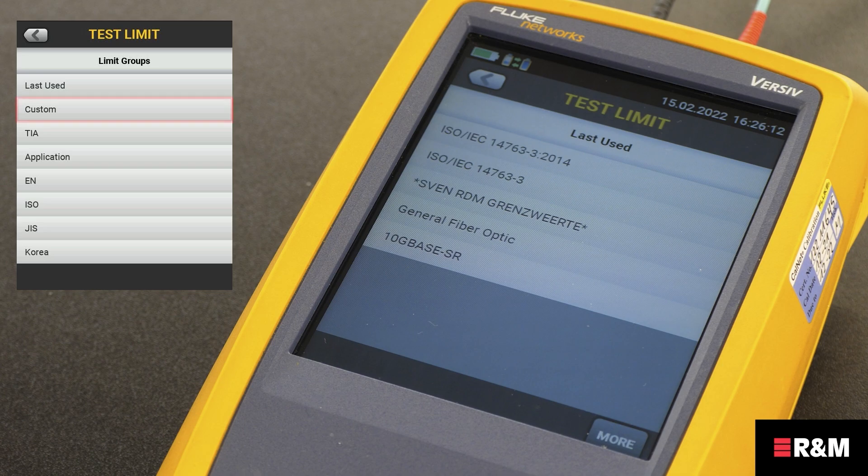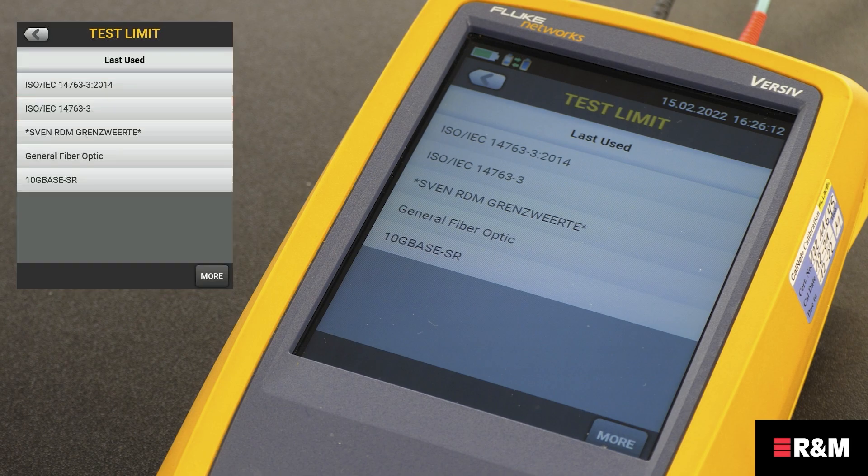To make a custom limit, tap Custom in the limit group list. With this tester, the test limit screens show only the limits that are compatible with the selected fiber type.